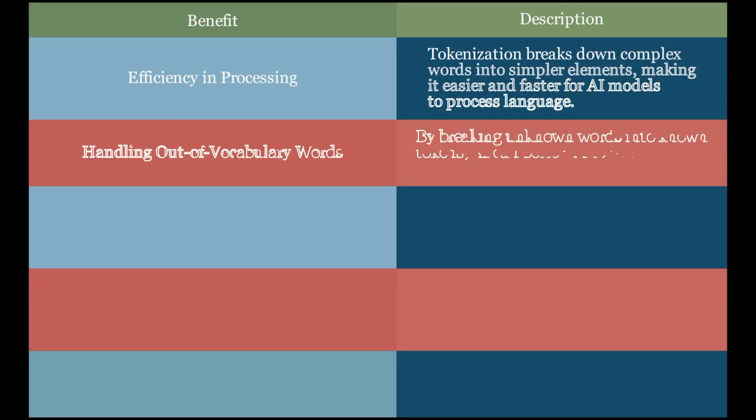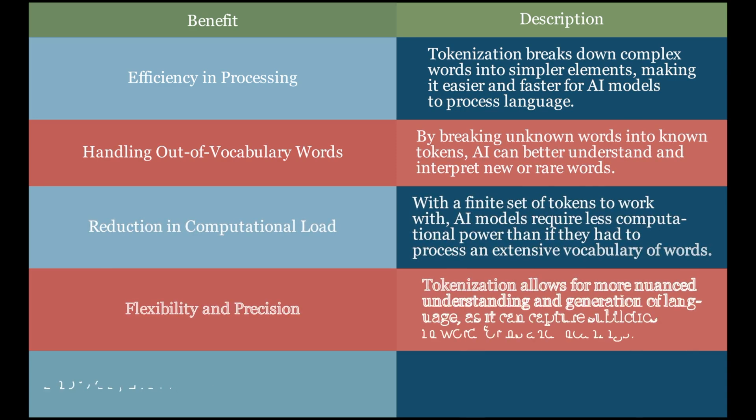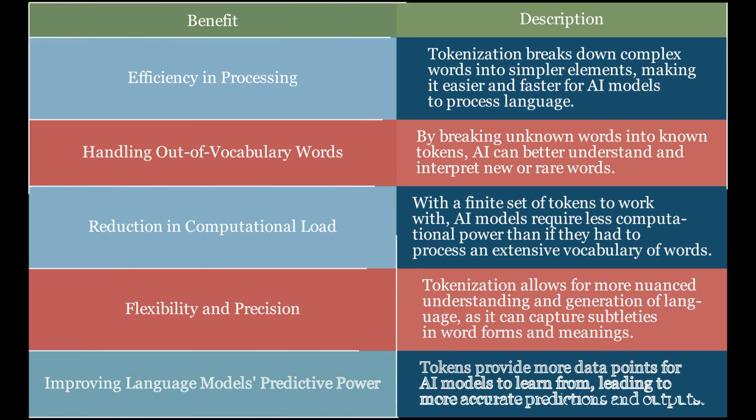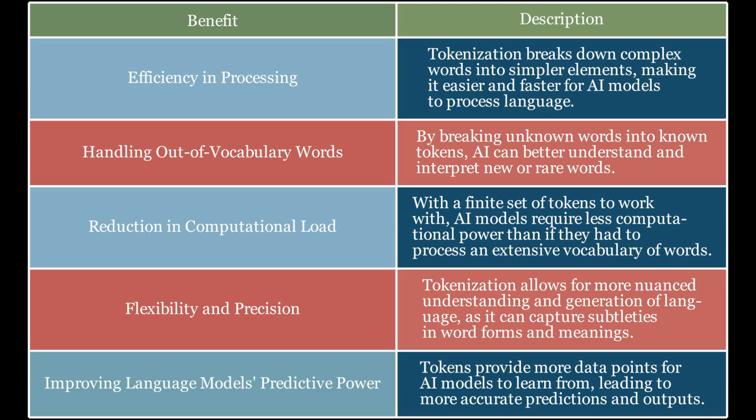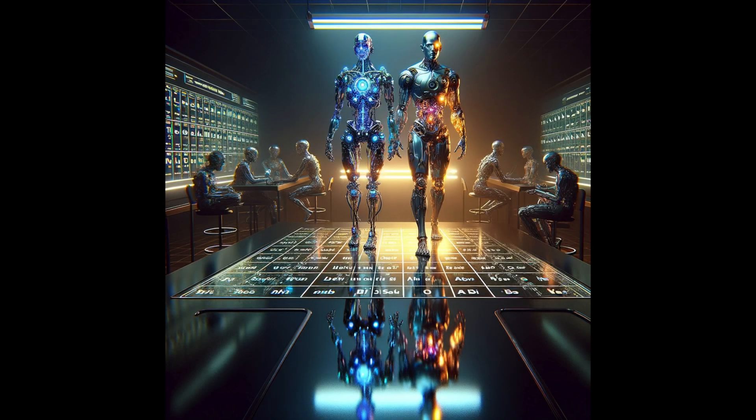The benefits of tokenization are significant. It leads to a reduction in computational load, since we're dealing with a smaller set of tokens compared to a potentially vast vocabulary of words. This efficiency is crucial in processing large volumes of text quickly and accurately. So to sum up, prompt engineering is not just about inputting words. It's about understanding the intricate dance of tokens that give those words meaning. It's about guiding the AI to see not just words, but the ideas and concepts they represent. And that's what sets apart a skilled prompt engineer in the ever-evolving world of AI.